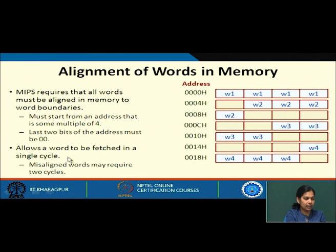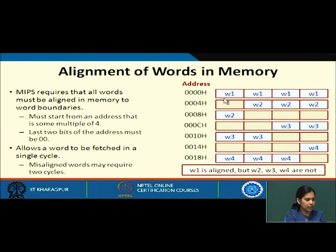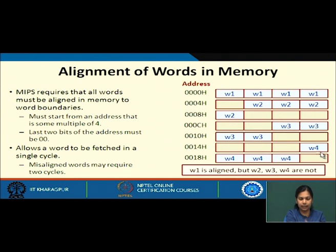MIPS requires that words be aligned in memory so that we can get a word in a single clock cycle, which is very essential. Here the first word is aligned, but the next word is not aligned because it does not start at a proper word boundary — it starts at the fifth byte. Similarly, word 3 and word 4 are both not aligned; only the first word W1 is aligned.